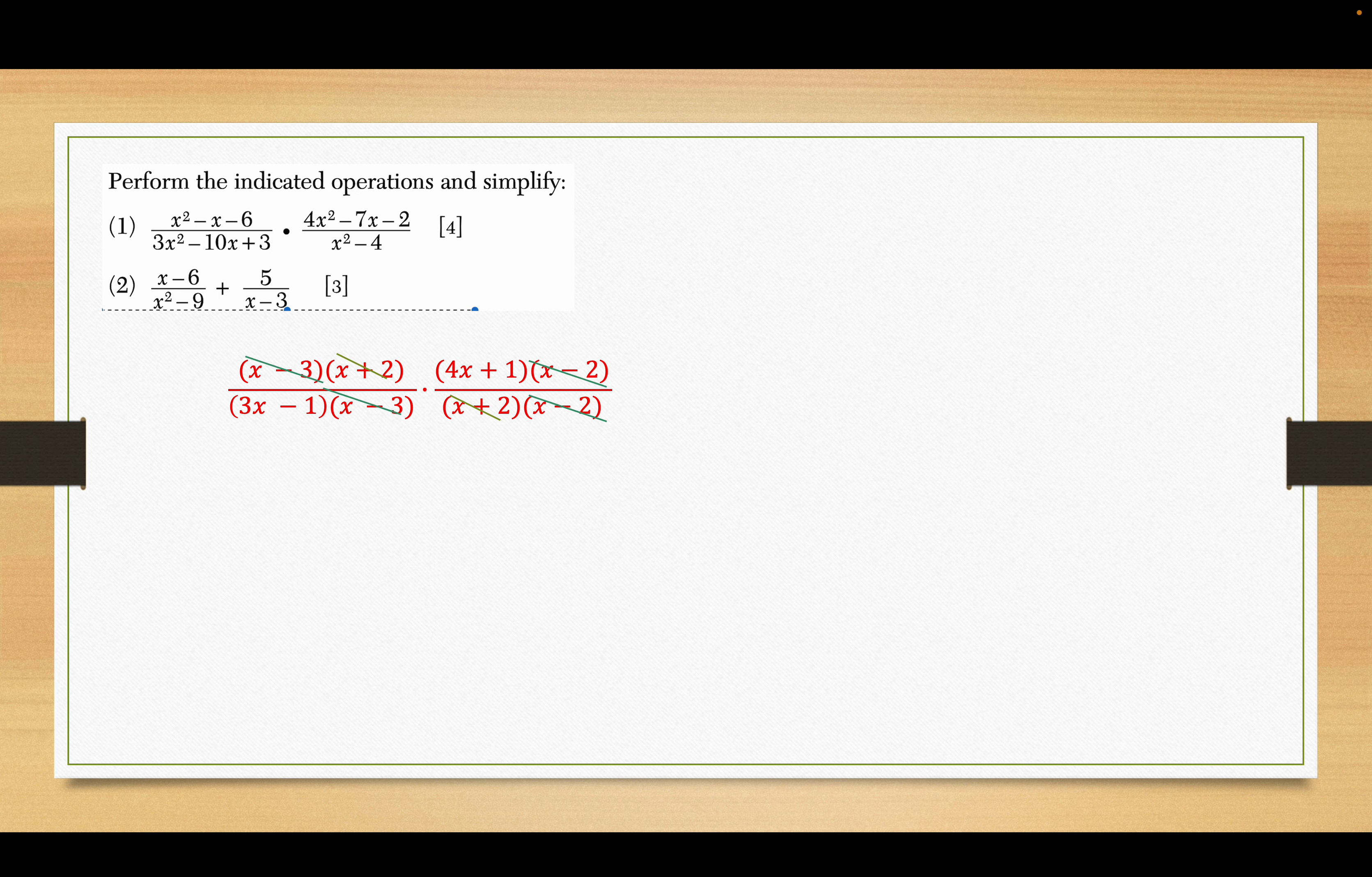The next one, 4x plus 1 times x minus 2 and then x plus 2x minus 2. Here are your cancellations. And I'm left with 4x plus 1 over 3x minus 1. And there's the correct answer to number 1. Number 2, I have x minus 6 over x plus 3x minus 3 plus 5 over x minus 3. So the denominator on the left has everything we need. The denominator on the right needs an x plus 3.